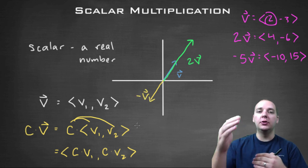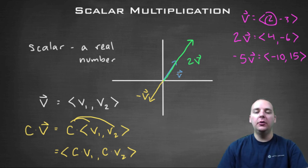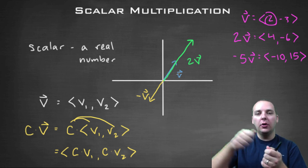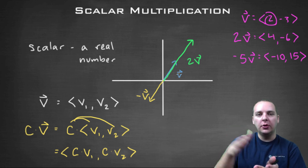So you can double v, or triple v, or have a negative scalar multiple of v. And what it'll do is make v shorter or longer, possibly even change direction. And in fact, that's why we use the word scalar—it scales a vector shorter or longer.